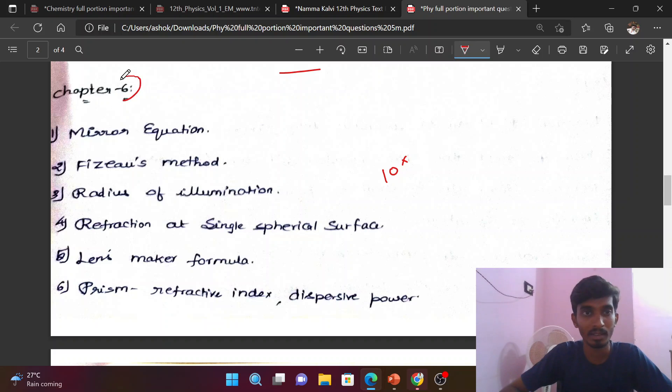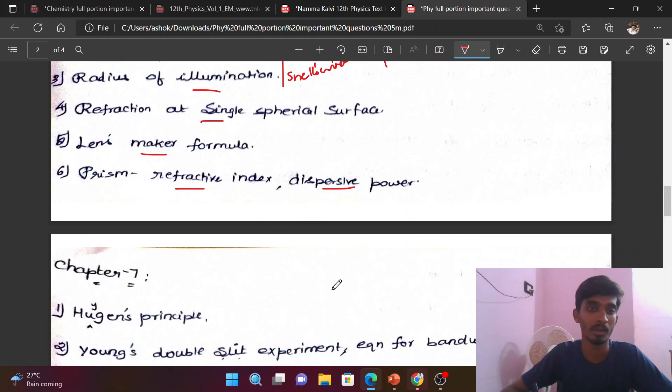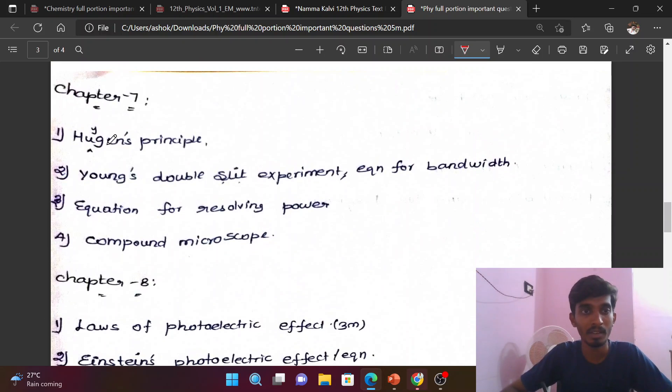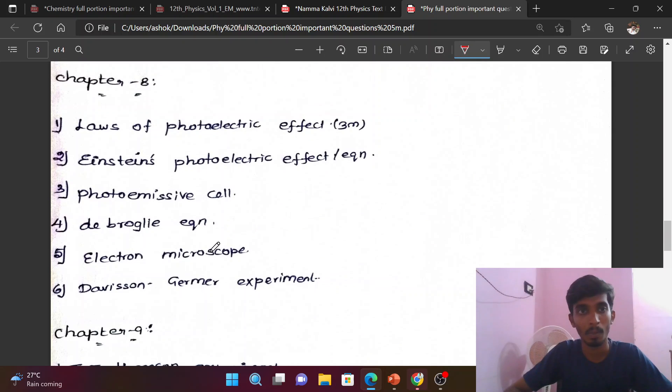Chapter 6: Ray optics - mirror equation, radius of illumination, refraction at single spherical surface, lens maker formula, prism, refractive index and dispersive power. Chapter 7: Huygens principle for reflection and refraction, Young's double slit experiment with bandwidth equations, and resolving power of optical instruments like microscope and telescope.